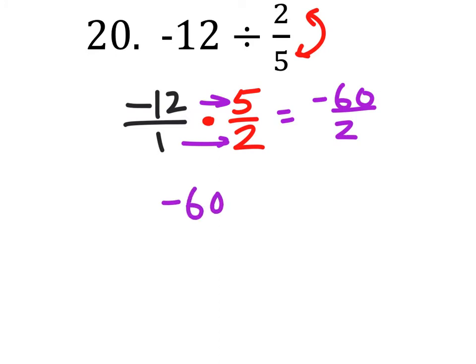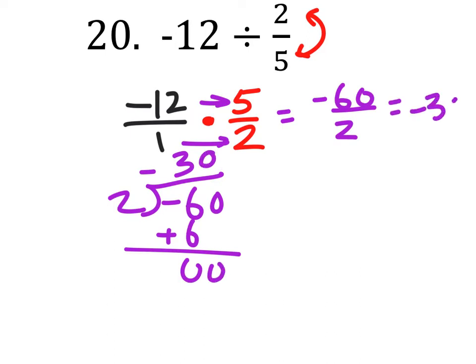Then you could do it this way, negative 60 divided by 2, you just know the answer is negative. 2 goes into 6 three times, so we'll add the 6. And then 2 goes into 0 zero times, so this would be negative 30.